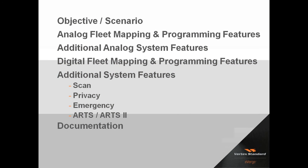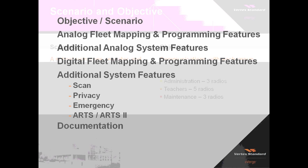In this presentation, we're going to set a scenario and add an objective. With that objective in mind, we're going to first fleet map the operations in analog, then program it to the radio, and after that, add additional features. Then we're going to take the same scenario and apply it, fleet map it for digital operation, program the radio, and go over additional systems like Scan, Privacy, Emergency, Arts2, and Documentation.